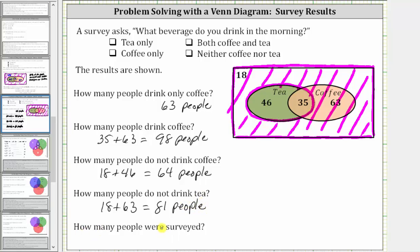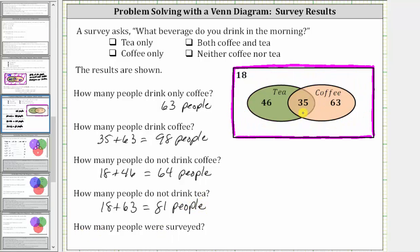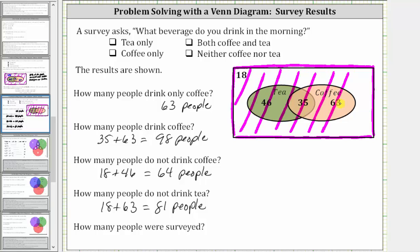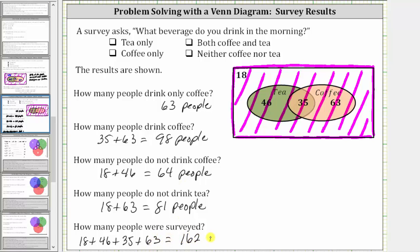And the last question is how many people were surveyed, which is equal to the number of people in the universal set — the set of everything being considered. The number of people surveyed is equal to 18 plus 46 plus 35 plus 63, which is equal to 162 people.